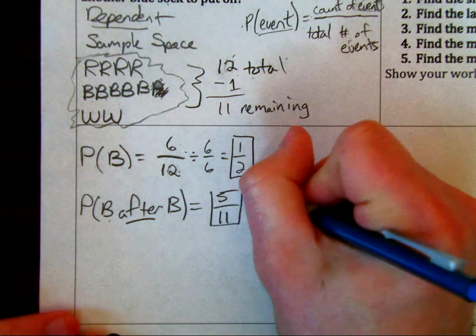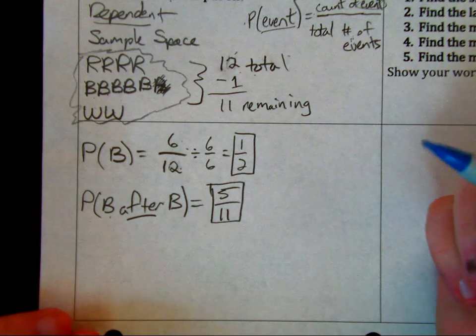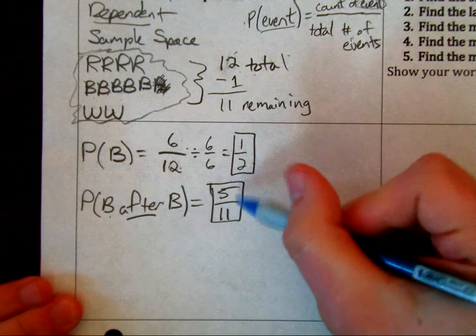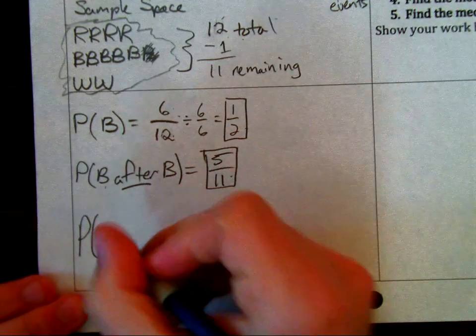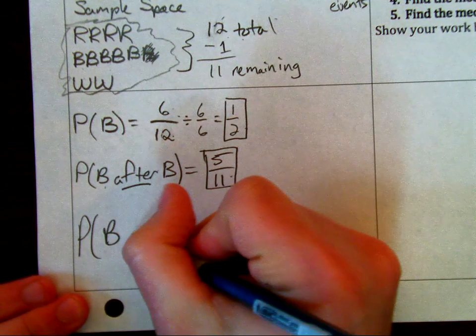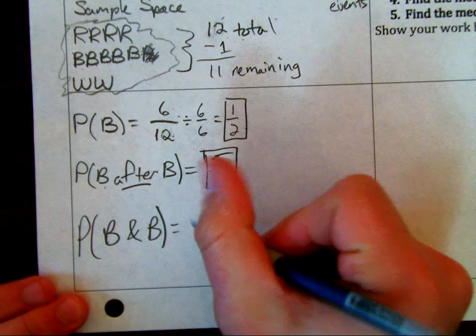Eleven. We do one event at a time, and then the very last thing we do is we multiply those two fractions together. So we're going to say probability of picking a blue sock and another blue sock, because we're trying to match. We have our first one, 1/2, we have our second one as 5 over 11.